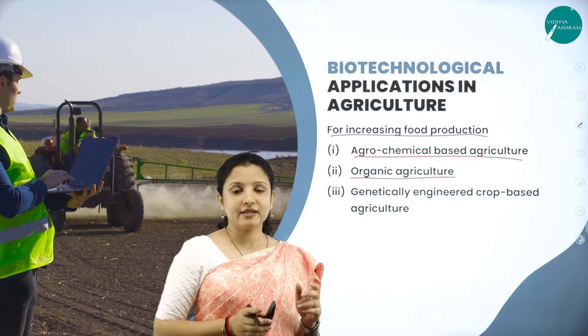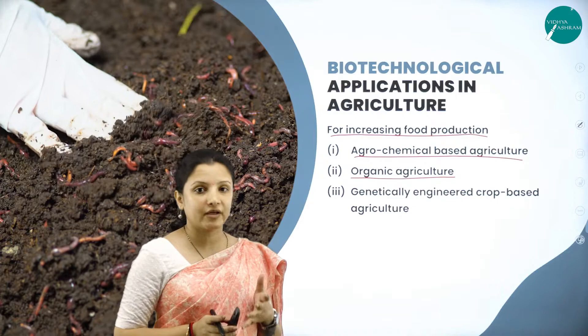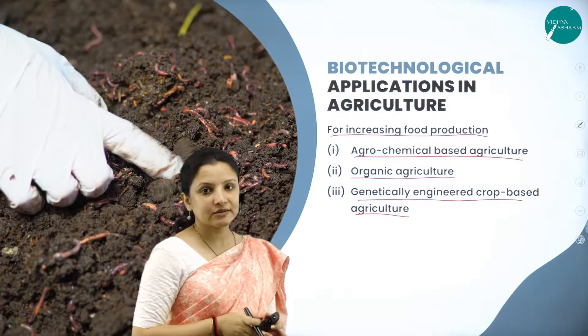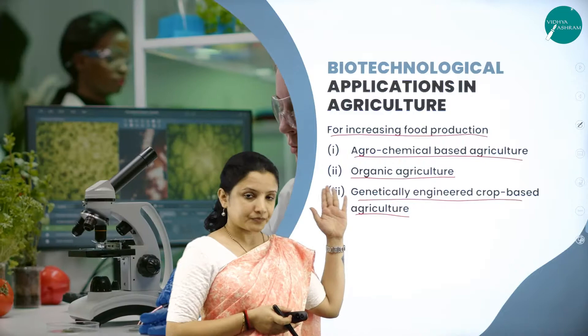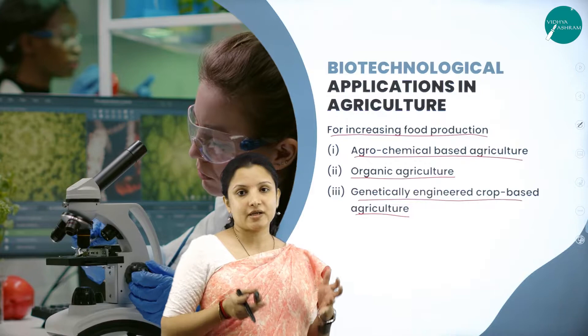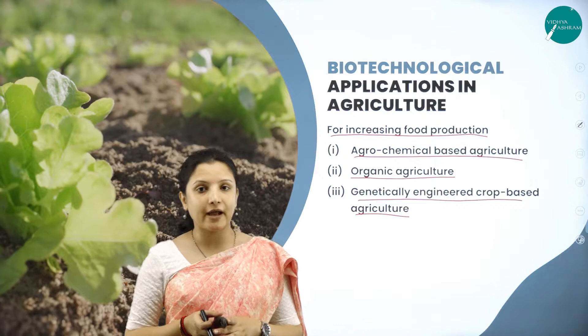However, organic agriculture is very costly. Therefore, most of the farmers cannot follow it. Also, through organic agriculture, the desired amount of yield that can be obtained is very low — that is one of the disadvantages. Next is genetically engineered crop-based agriculture, which is one of the best-suited methods for farmers. These crops are created by scientists or plant breeders under laboratory conditions by manipulating genes using recombinant DNA technology, and these genes are inserted into a crop plant of interest.